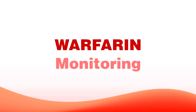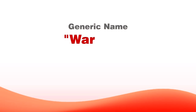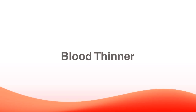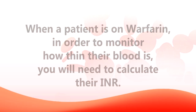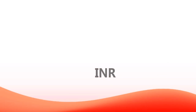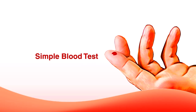Today we are going to talk about warfarin monitoring. Warfarin is the generic, and the brand name is usually Coumadin. It's very widely used as a blood thinner. When somebody has a condition that requires their blood to be a little thinner, they're put on this drug. And when they're put on this drug, they need to monitor how thin the blood actually is. That value is known as the INR, which is measured as a simple blood test, and that number tells you how thin a person's blood is.